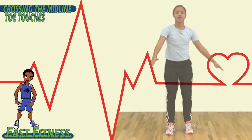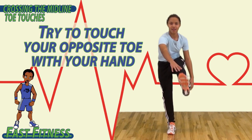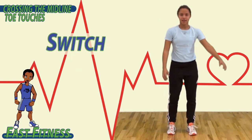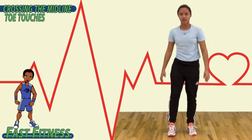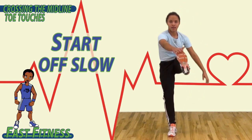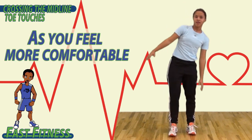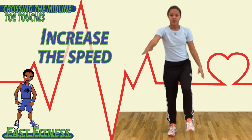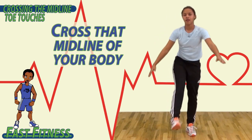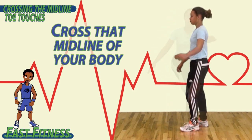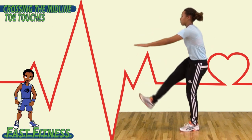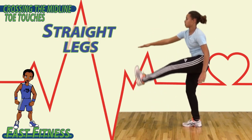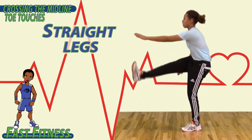To begin, keeping your legs straight, try to touch your opposite toe with your hand and then switch. Start off slow, and as you feel more comfortable and balanced, go ahead and increase the speed. Cross that midline of your body, touching your hand to your toe. Remember, try to keep your leg as straight as you can.